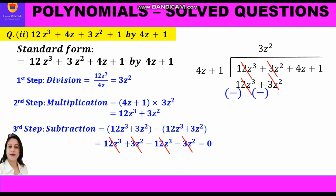Now plus 12z³ and minus 12z³ cancel, and 3z² and minus 3z² also cancel, leaving zero. Further, we bring down the next two terms from the dividend: 4z plus 1, and start all three steps again.